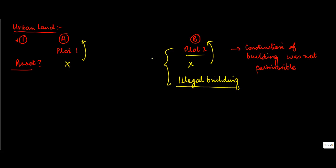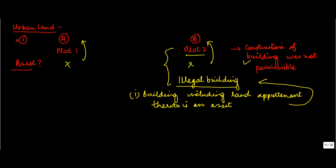Now, while for the purpose of this clause which says that urban land is not classified as an asset if construction is not permissible, however, clause 1 provides that a building including land appurtenant thereto is an asset. This building along with this land will be classified as an asset because the other clause does not specify that the building has to be constructed on legal versus illegal land.